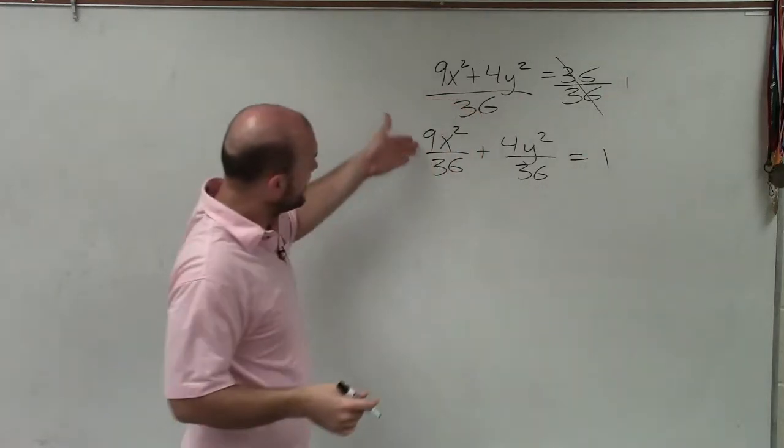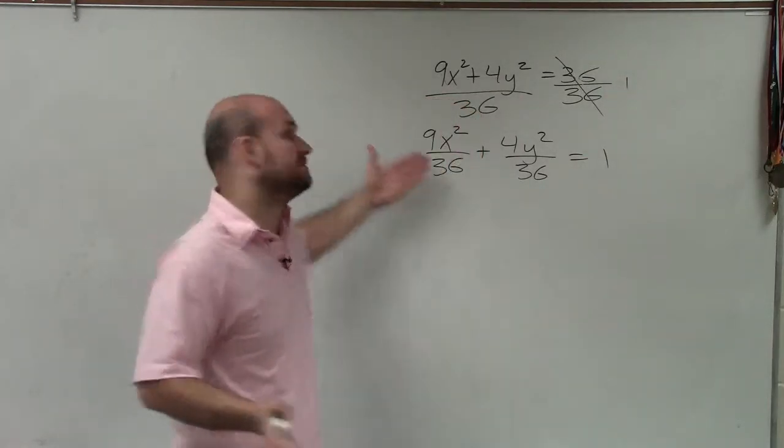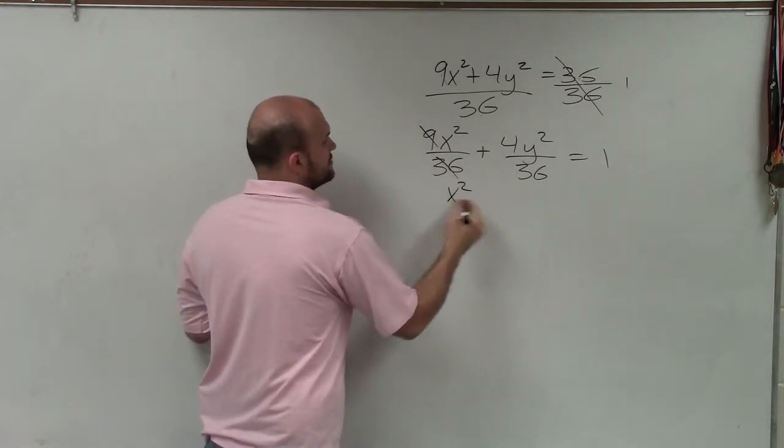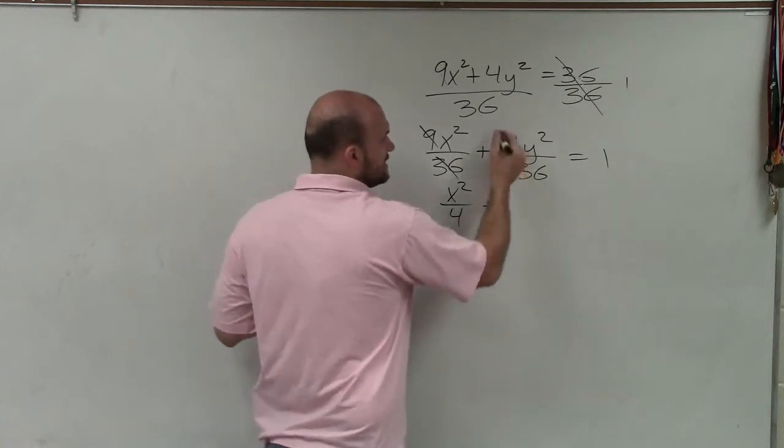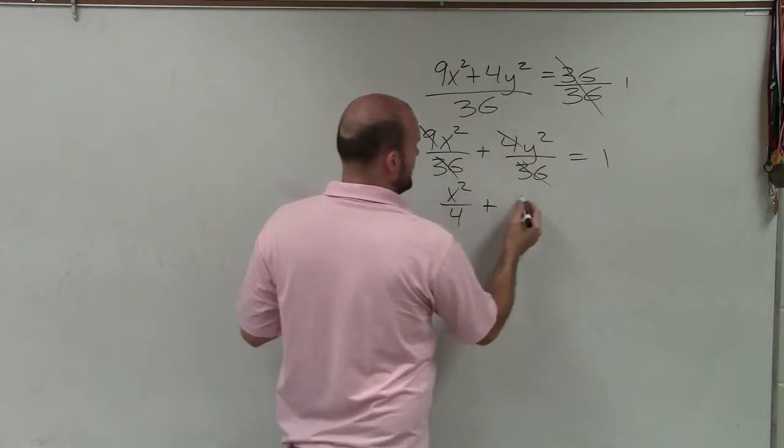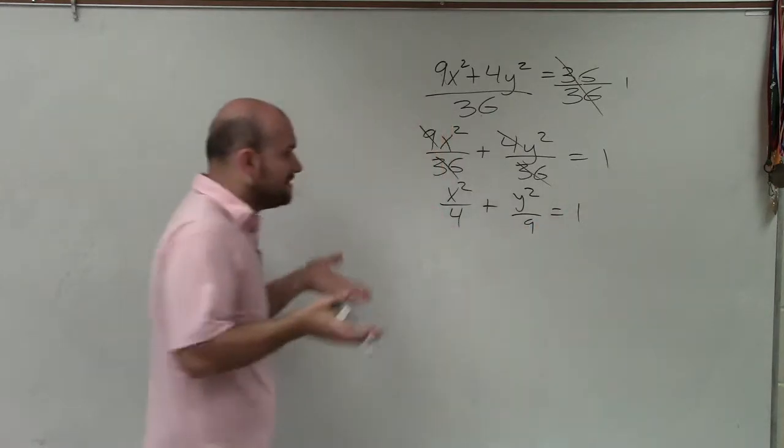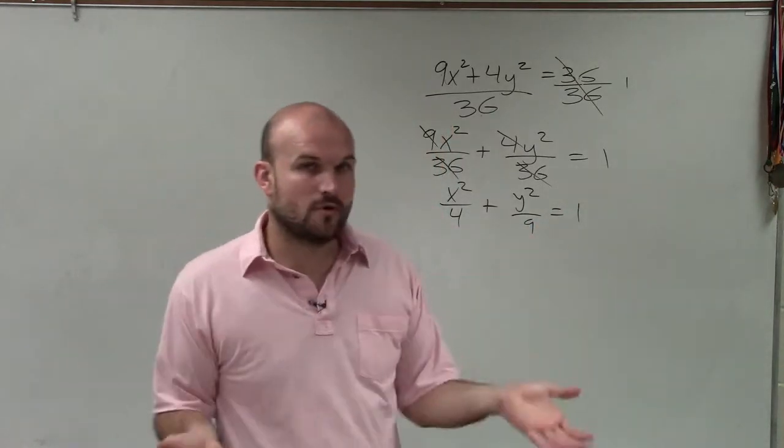So now I see I have some fractions over here that I can reduce. So I can divide out a 9 from the top and the bottom, and I get x² over 4. And here I can divide out a 4 from the top and bottom, and I get y² over 9 equals 1. So now this looks a little bit more familiar in our standard form.